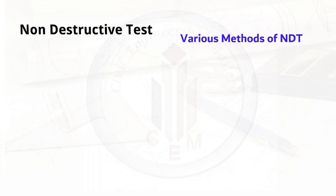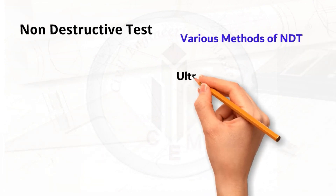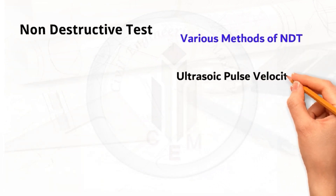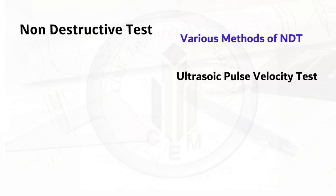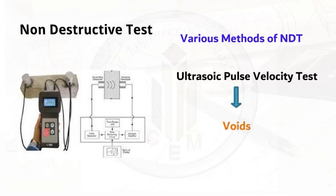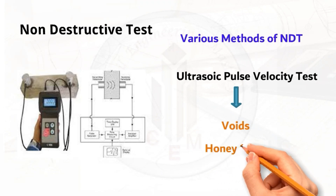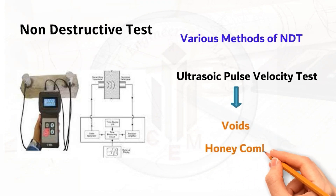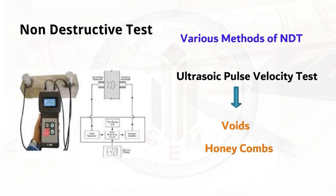The first NDT method is ultrasonic pulse velocity. Using this test, we can detect voids, honeycombs, cracks, and other inhomogeneous conditions of the concrete.